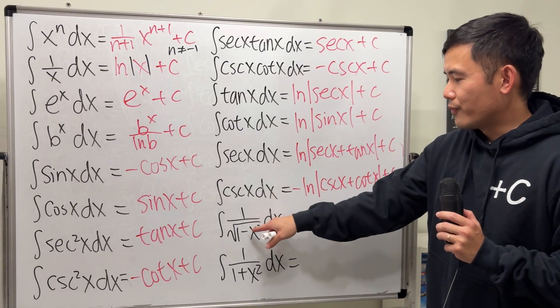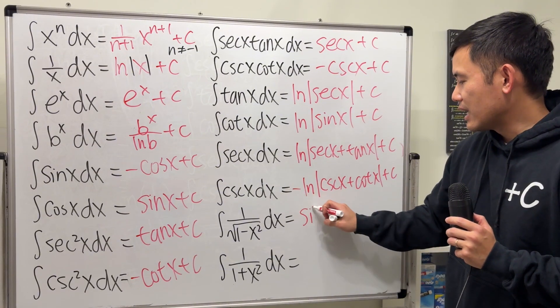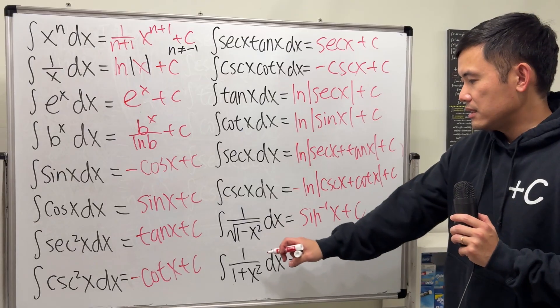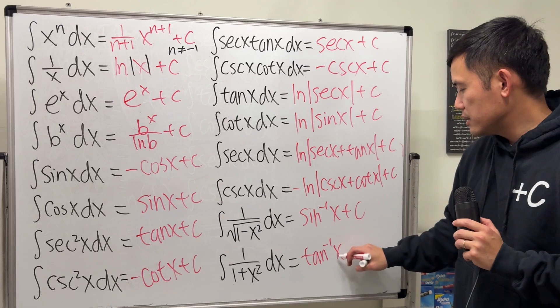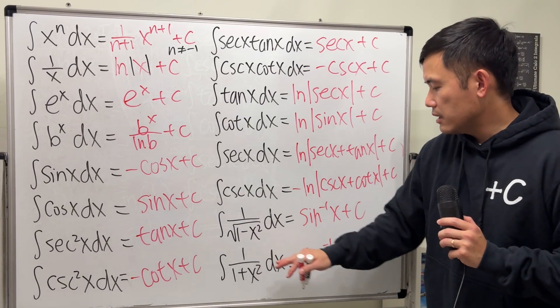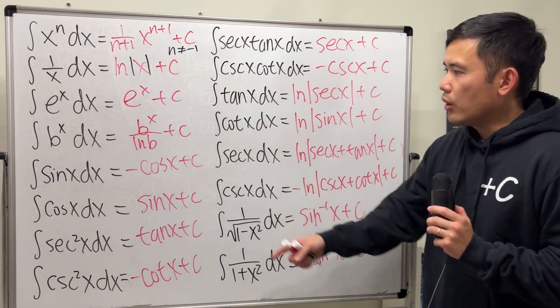Last two. 1 over square root of 1 minus x squared. This right here is inverse sine of x. Definitely remember that. Lastly, integral 1 over 1 plus x squared. This right here, inverse tangent. Again, the derivative of this gives you that. The derivative of this gives you that.